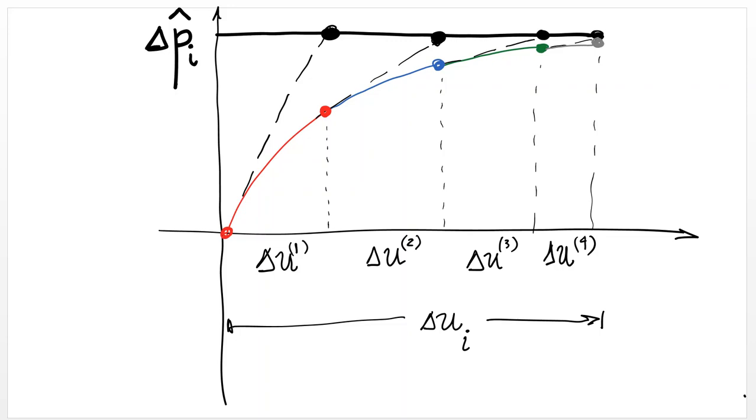So basically, this is what you're doing. You have delta P hat that is applied at one step. You begin with your initial stiffness. And from that, you compute your first displacement.